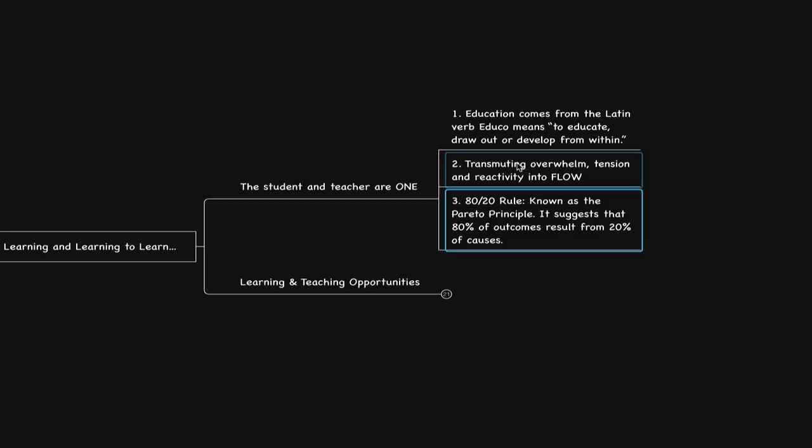I believe the teacher needs to take responsibility for this — to set up an environment that facilitates flow-based learning, one that is free from tension, overwhelm, and stress. One of the best ways to do this is to start the conversation with: we are on this journey together, so you can let go of the idea that you have to get it perfect. Relax. I'm going to discover your natural learning style as we go along, and you're going to find you relax a lot more, learn effectively, and actually enjoy learning. This releases the overwhelm, the tension, and the reactivity, transmuting that energy into flow, which facilitates accelerated learning.